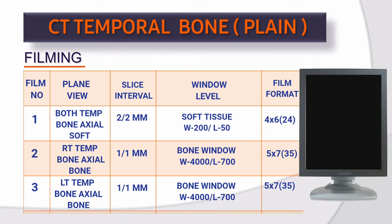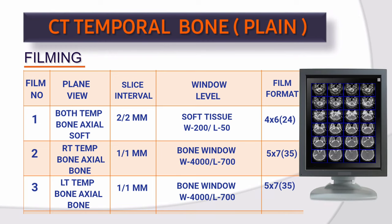Film 1: Plain view, both temporal bone axial soft. Slice interval 2×2 mm. Window level: soft tissue — window width 200, window level 50. Film format: 4×6, 24 images.